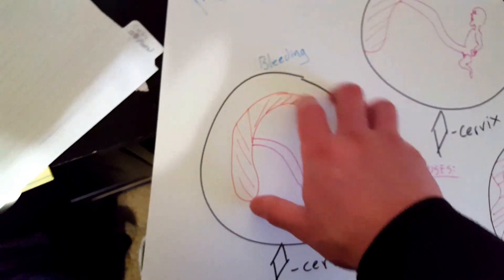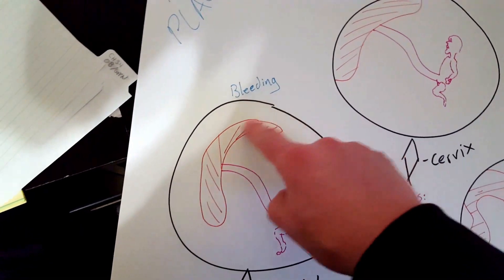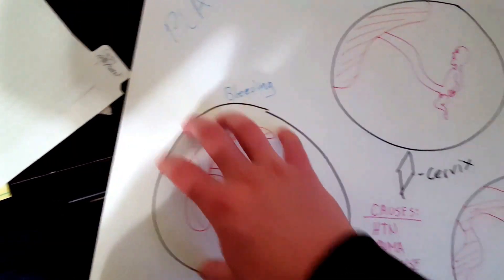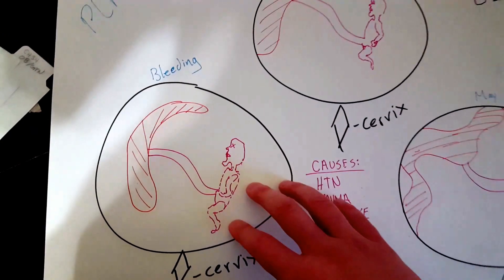However, with the complete abruptoplacenta, there is no more exchange because the placenta is completely detached from the uterine wall, the uterus. So then this baby is going to die. It's not going to be good.